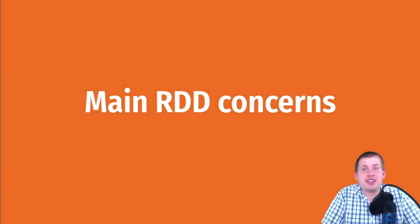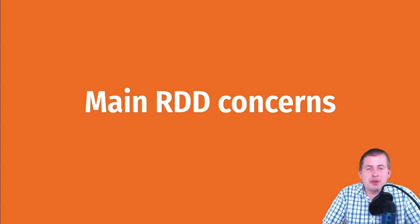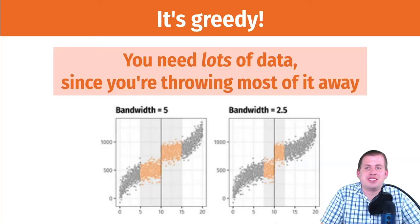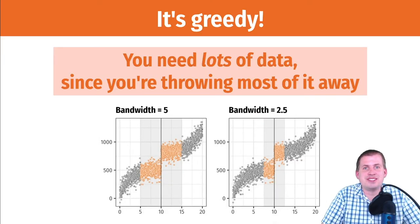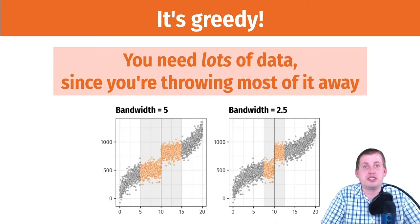So finally, we need to talk about some of the concerns and the pitfalls that you might come across when you're working with regression discontinuity design. The main one, the biggest problem that you'll run into is statistical power. You need a ton of data to do this type of regression discontinuity analysis because you're throwing most of it away.